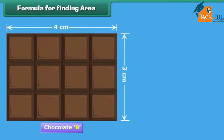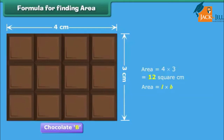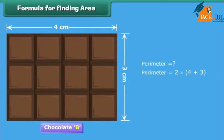We found the area of chocolate B by counting the total number of squares on it. Alternatively, we can also calculate the area by multiplying the number of squares along the length with the number of squares along its width. Thus, area is equal to the length multiplied by the width. The perimeter is equal to twice the sum of the squares along its length and width. Thus, the perimeter of chocolate B is equal to 14 centimeters.